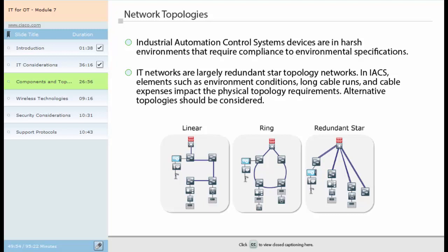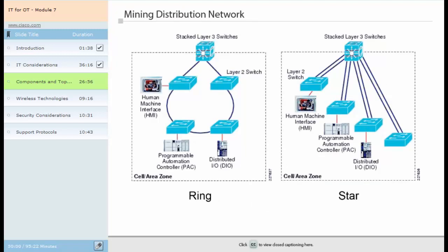In the mining industry, there are several network topologies used for data transmission. The network topology selected for the wired and wireless sensor network largely depends on the area that needs to be covered. Considerations like data redundancy or energy optimization need to be taken into account. Recommended topologies include the ring topology, star topology and mesh topology. Every network topology has advantages and disadvantages, but in cases like the mining industry with many phases — extraction, transportation and processing — a hybrid of topologies makes the most sense.